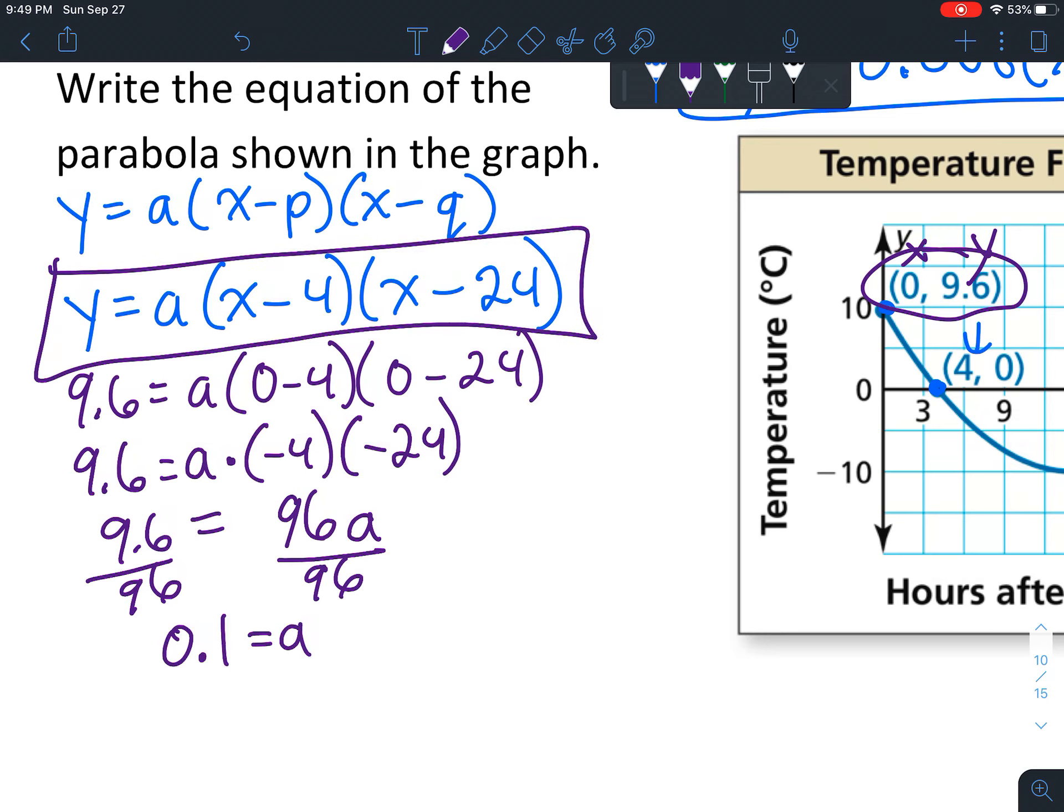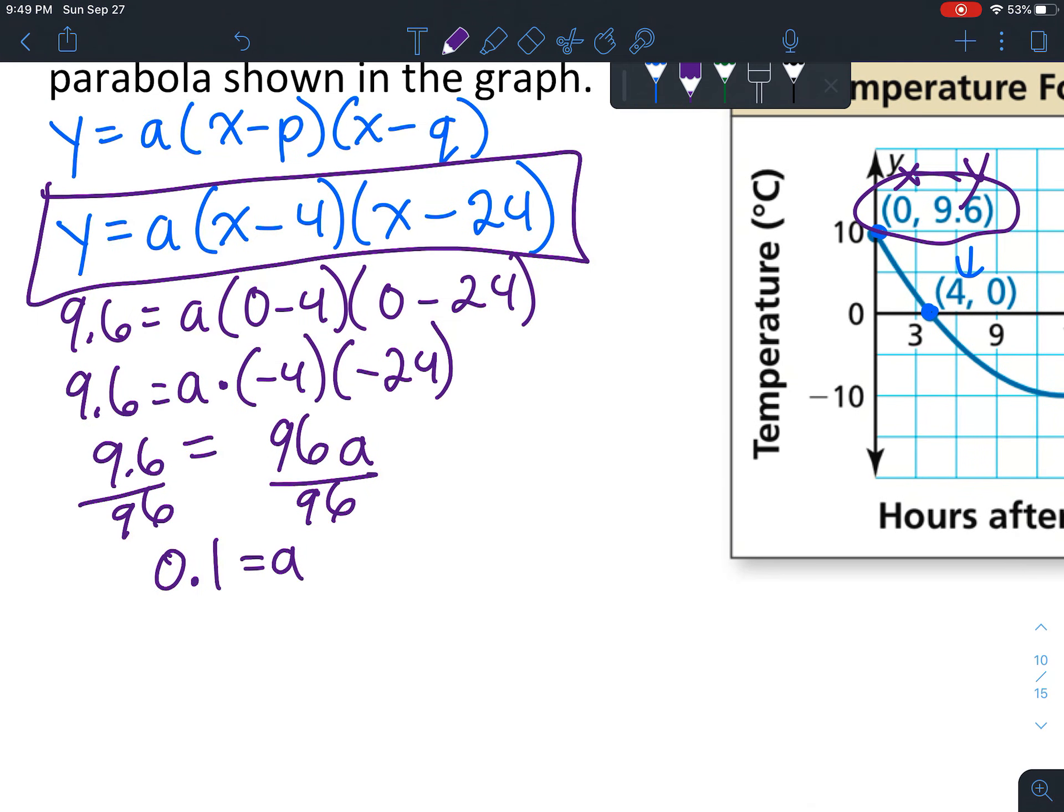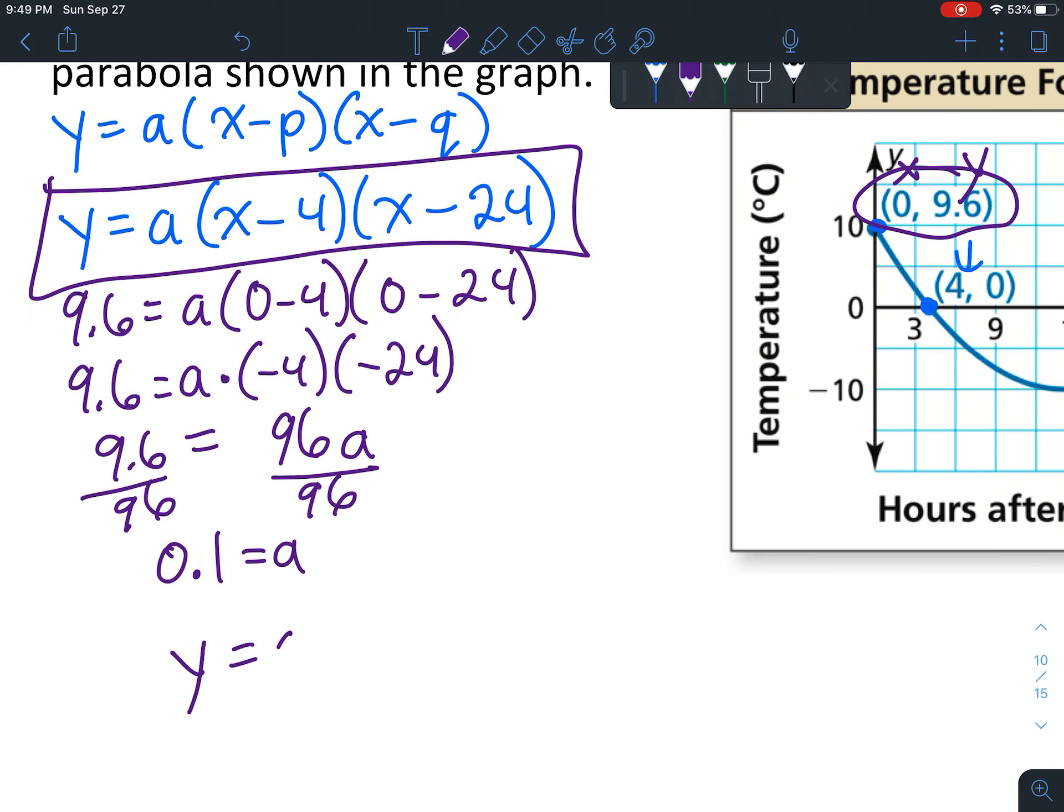Now you're going to plug it back into this equation, kind of like last time, except this time we leave x and y as unknowns because we want a general equation that works for any input of x to get our y. So we end up with y = 0.1(x - 4)(x - 24).